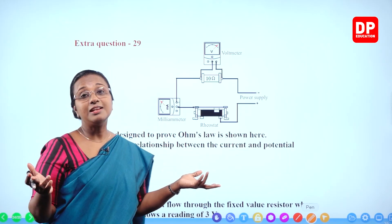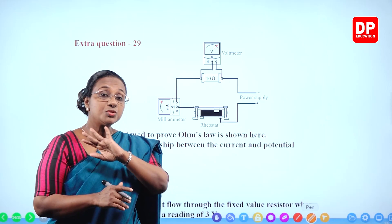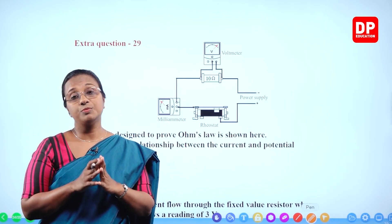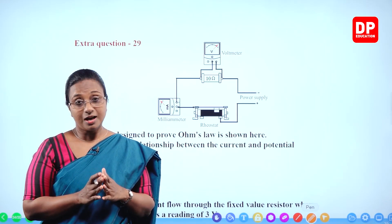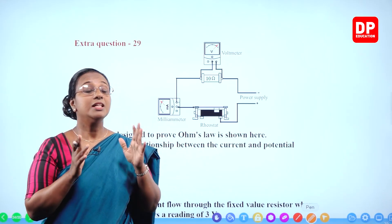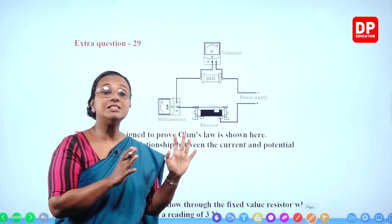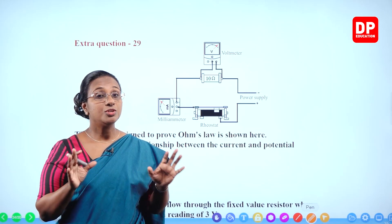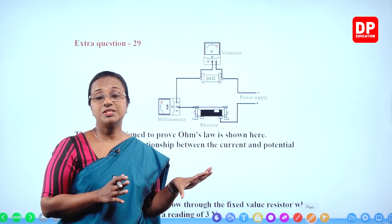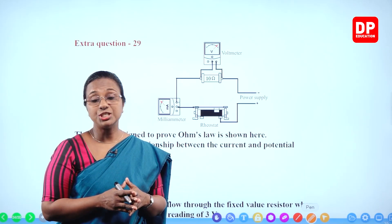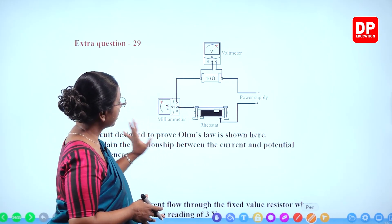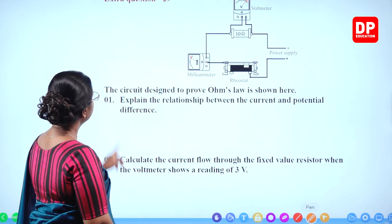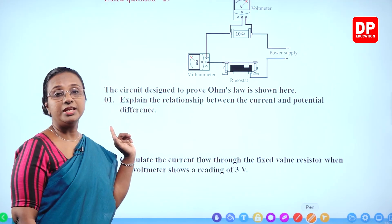The milliammeter is connected in series combination, and the voltmeter in parallel combination. Again, since we have a voltmeter and ammeter, this relates to Ohm's law. So far in this chapter, three questions have all been related to Ohm's law — the relationship between potential energy and current — but each circuit is connected differently.